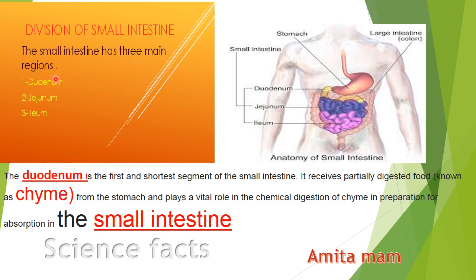The small intestine has three main regions: duodenum, jejunum, and ileum. How can we define the duodenum? The duodenum is the first and shortest segment of the small intestine. Keep this word in mind — the duodenum is the shortest segment. The duodenum is the first and shortest segment of the small intestine.